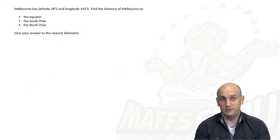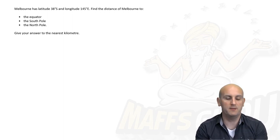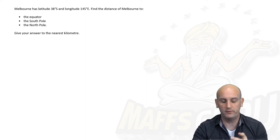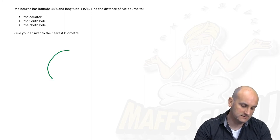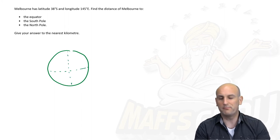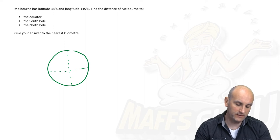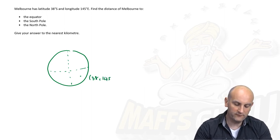These questions are all about interpretation and being able to identify the important reference points: the equator, the prime meridian, the north pole, the south pole. So Melbourne has a latitude of 38 degrees south and longitude 145 degrees east. Drawing the circle with the equator and prime meridian, we get 38 degrees south and 145 degrees east marked.